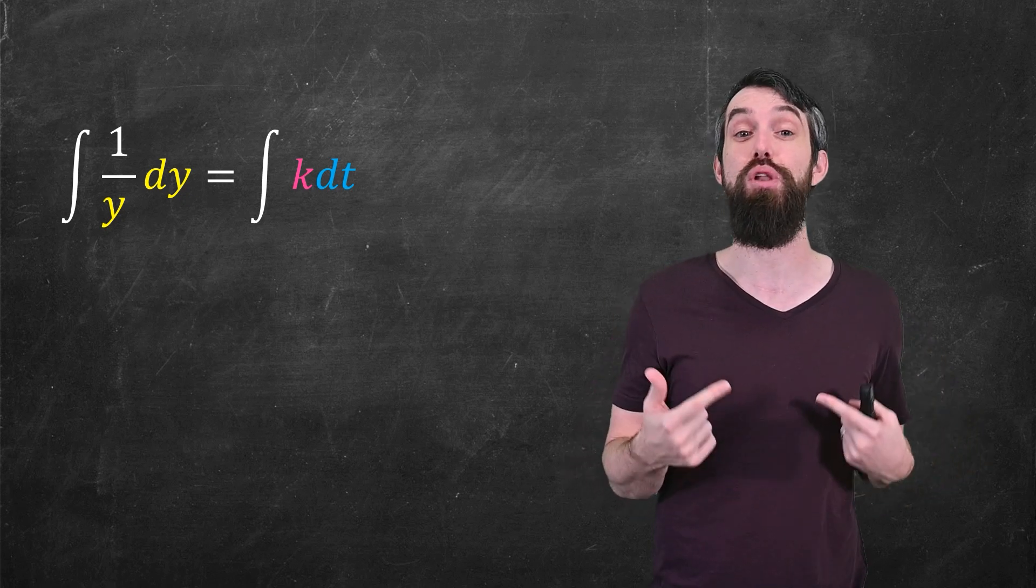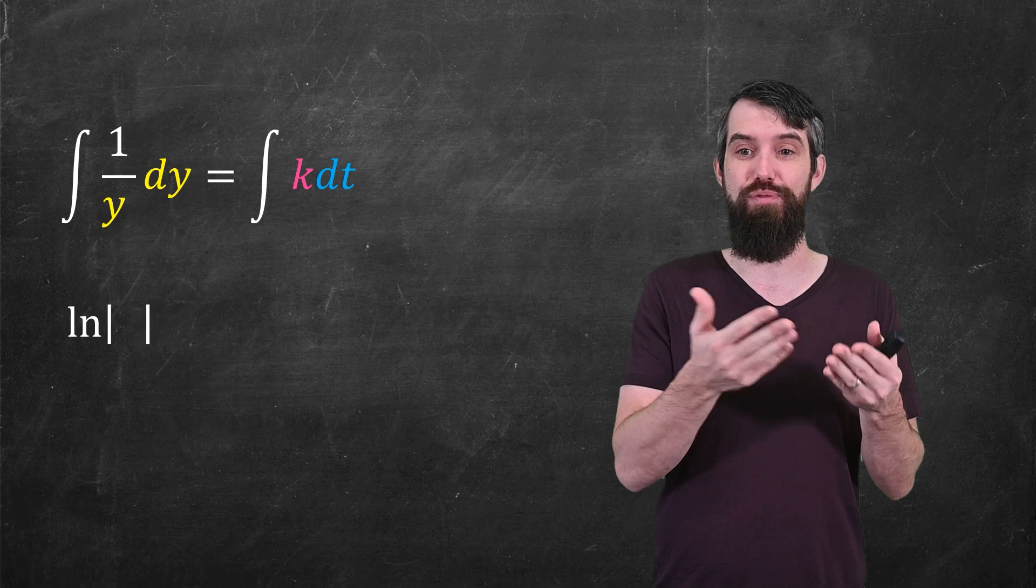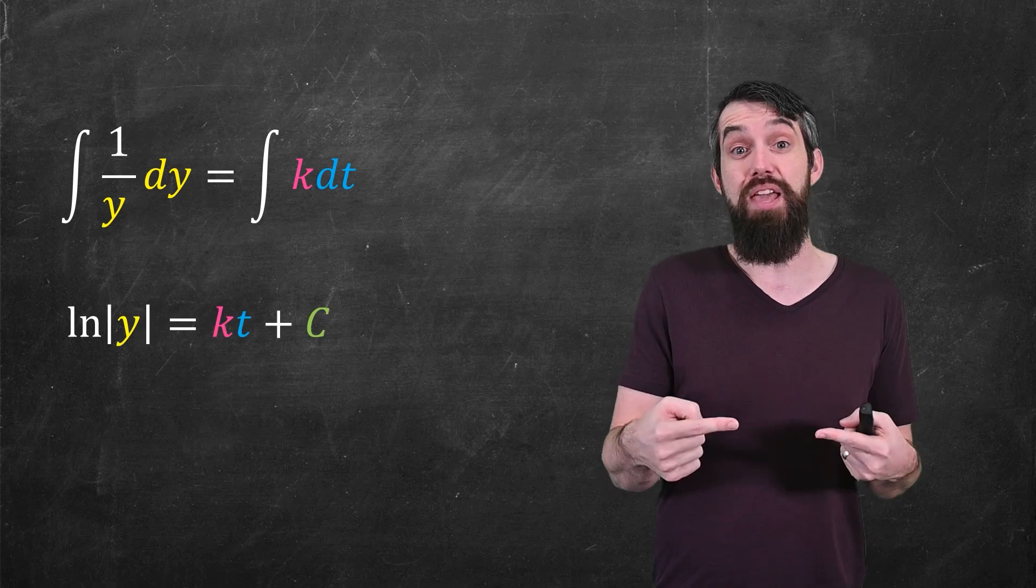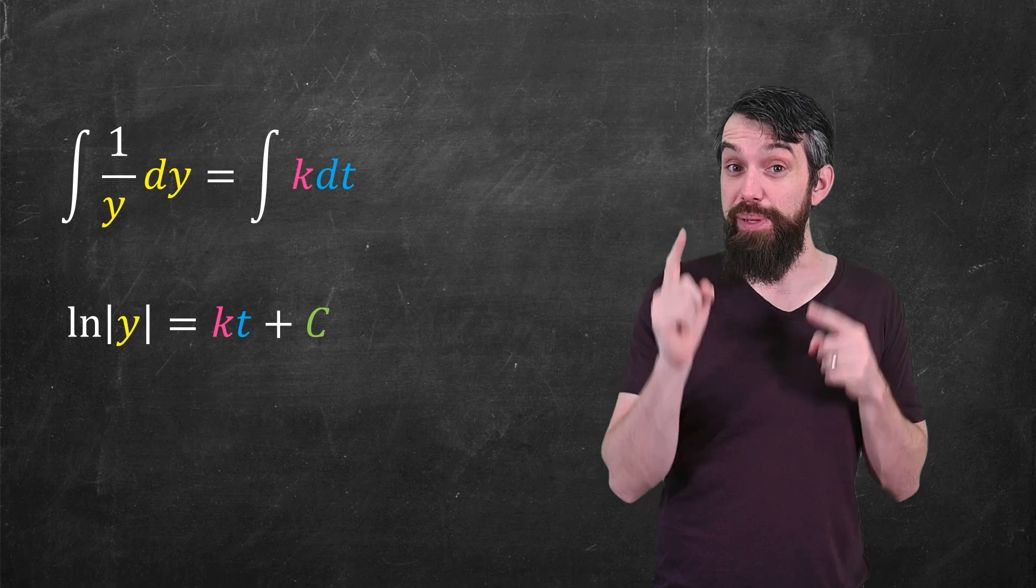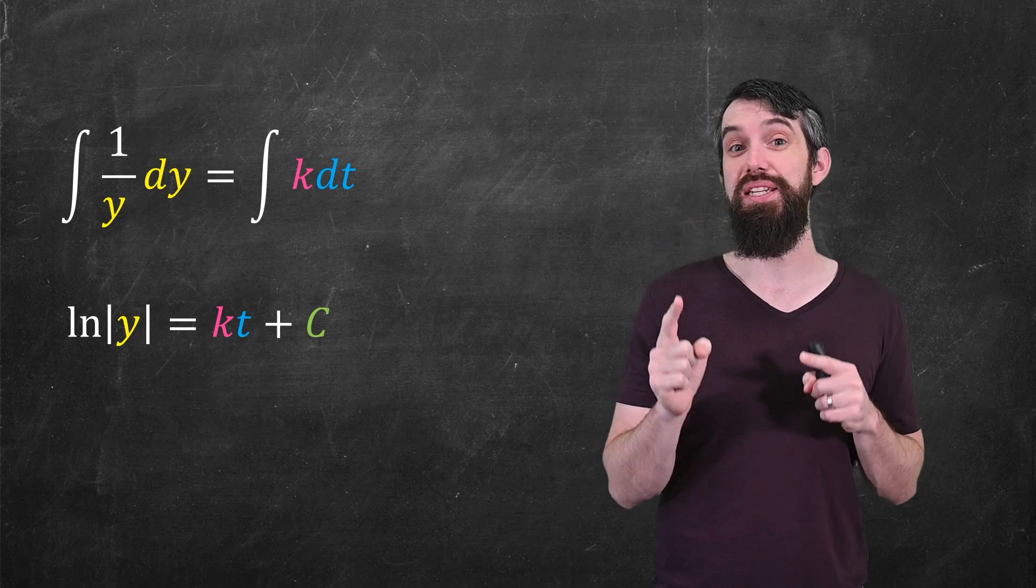Let's do those integrals. On the left, the integral of 1 over y is the logarithm of absolute value of y. On the right, the integral of k becomes kt. And then I always have to remember to add the plus c, my additive constant of integration.